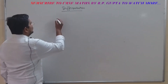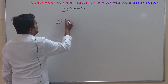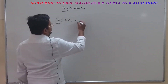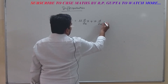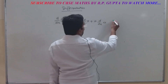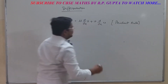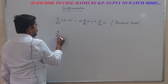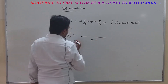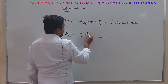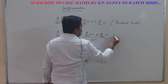First rule: if you have d/dx of u·v — meaning two functions — then it equals: first function × d/dx of second, plus second function × d/dx of first. This formula we call the product rule. Second formula, the quotient rule: d/dx of u/v equals [v · d/dx(u) − u · d/dx(v)] divided by v². This formula we call the divide rule.